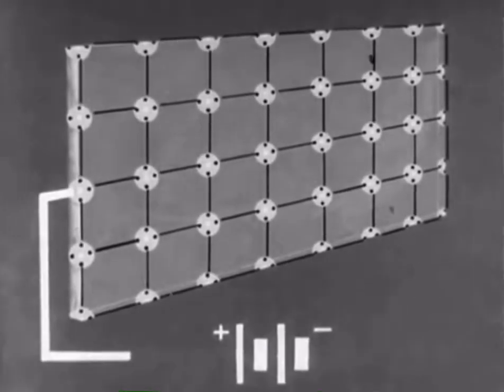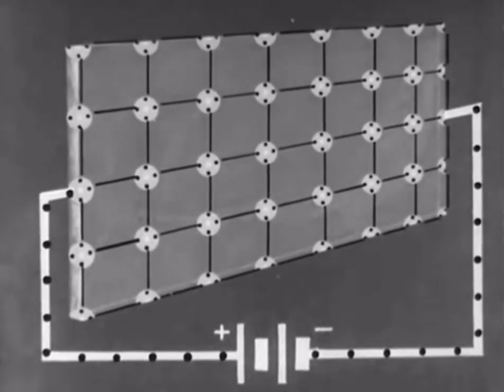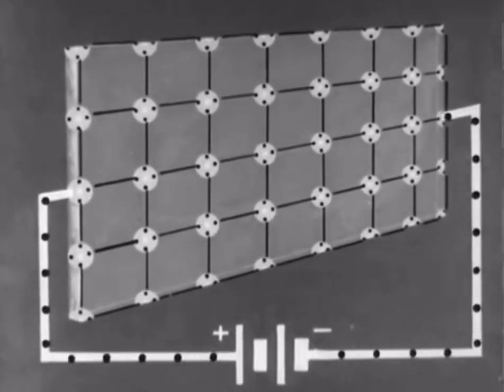To increase conductivity, the number of free electrons must be increased. One way of doing this is by the application of heat, which causes the crystal lattice to disintegrate.